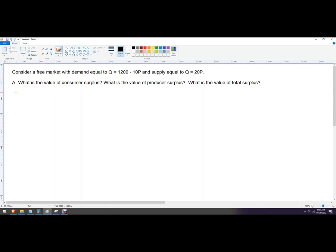So basically we're going to set it up this way. Quantity demanded equals quantity supplied. So this is going to be 1200 minus 10p, and p stands for price, equals 20p.